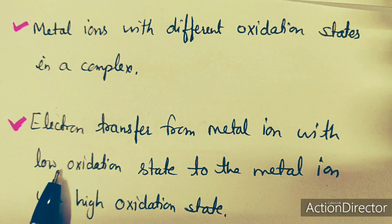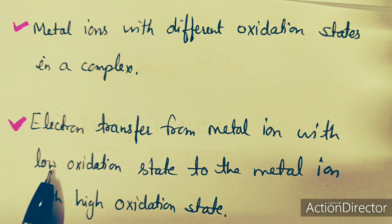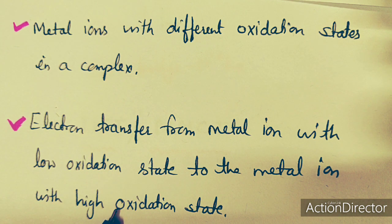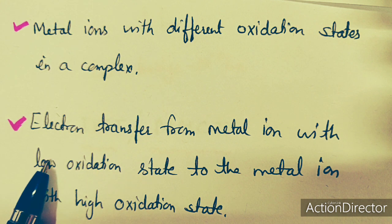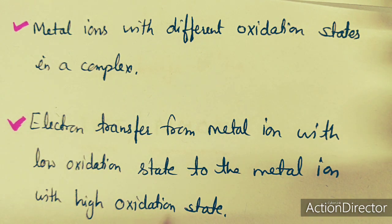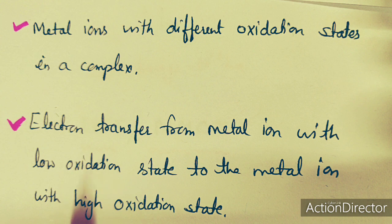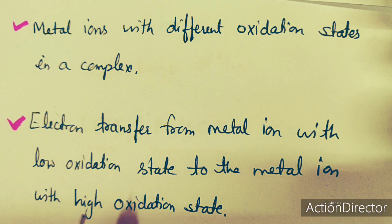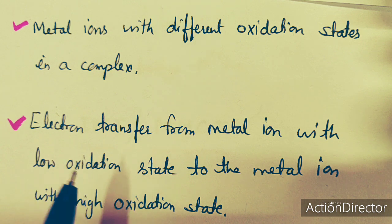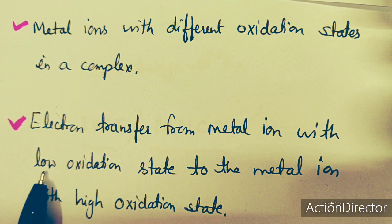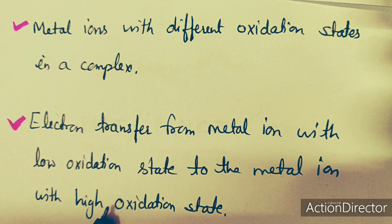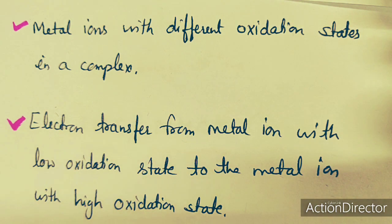The metal ion that transfers its electron to the higher oxidation state metal ion will oxidize, and the metal which gains the electron will reduce. So again it is an oxidation and reduction type of charge transfer. The lower oxidation state will increase after transferring the electron, and the oxidation state of the metal ion with higher oxidation state will decrease. This is the basic principle behind metal to metal or intervalence type charge transfer.